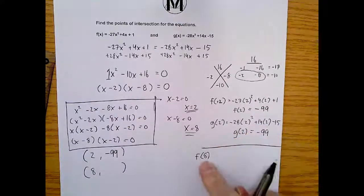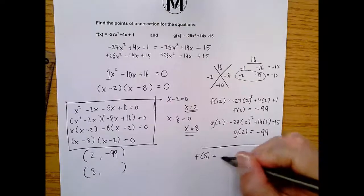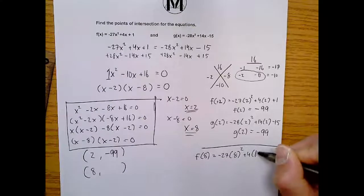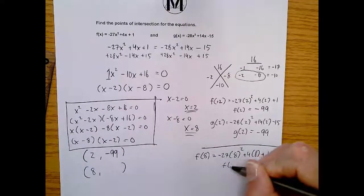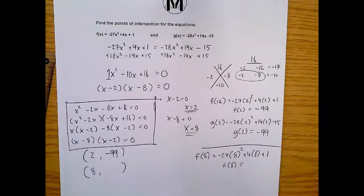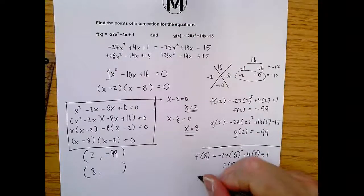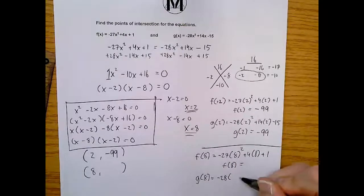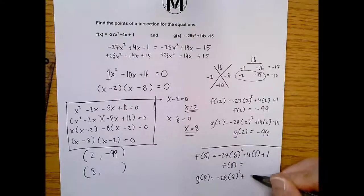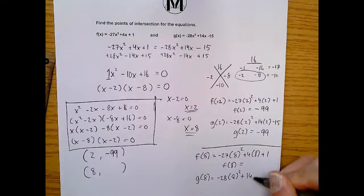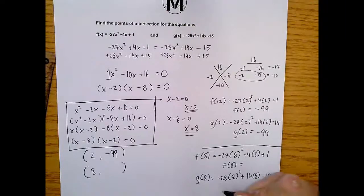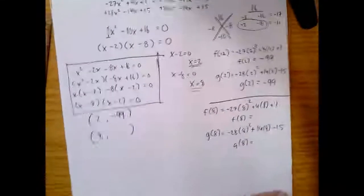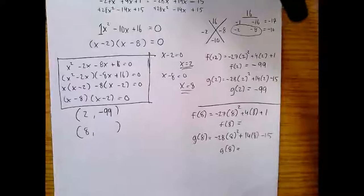So it's the same idea, but now it's f(8). f(8) is -27(8)² + 4(8) + 1. And my result of f(8) I'll put right there when I get it. g(8), same thing: -28(8)² + 14(8) - 15. So g(8) would be right there. Let me scroll down a little bit, just to frame myself a little better. All righty.